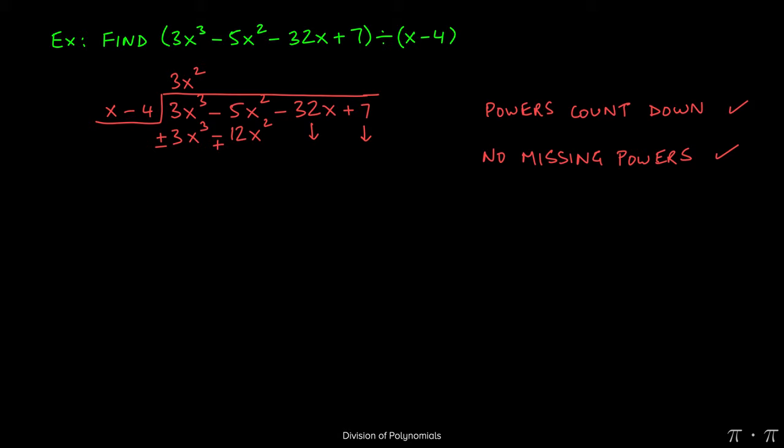Once we've changed the signs, the remaining two terms in the problem just come along for the ride, so they'll just be brought down. Now when we combine like terms, 3x cubed and negative 3x cubed will cancel.